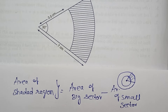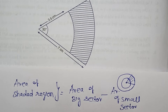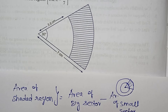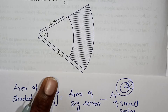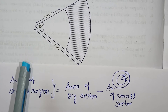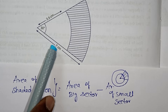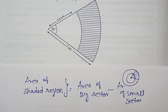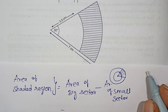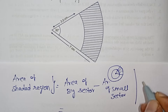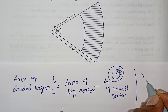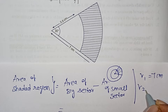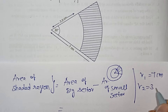Normally, the area of a circle is pi r squared, and the sector area uses the factor theta by 360. There are two different radii: the big sector has R1 and the small sector has R2. From the diagram, R1 is 7 cm and R2 is 3.5 cm.